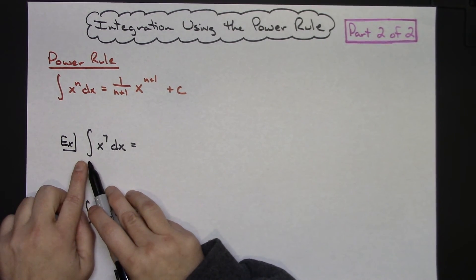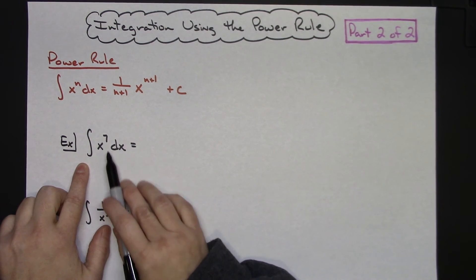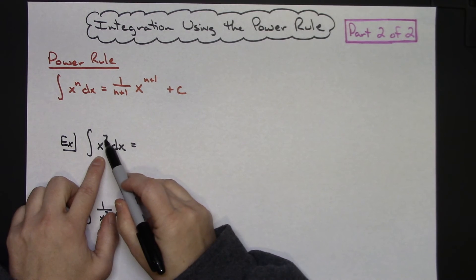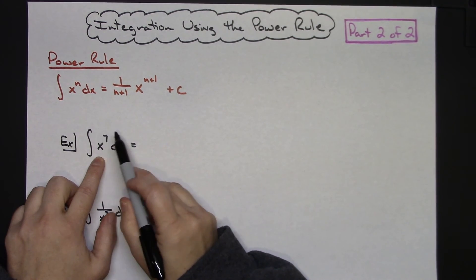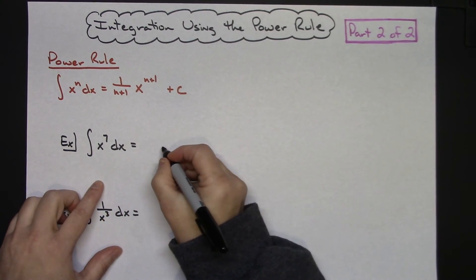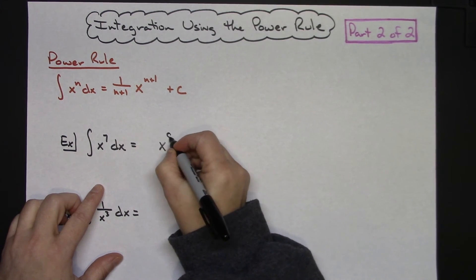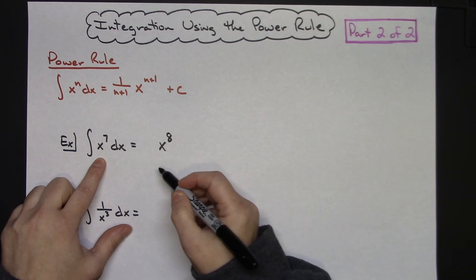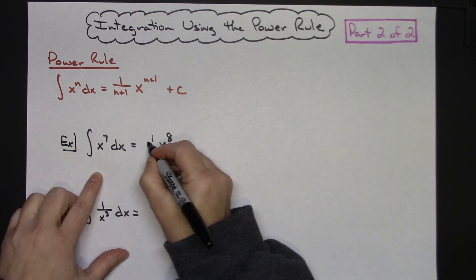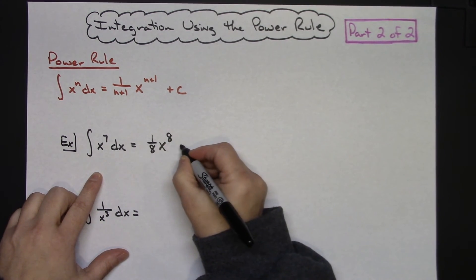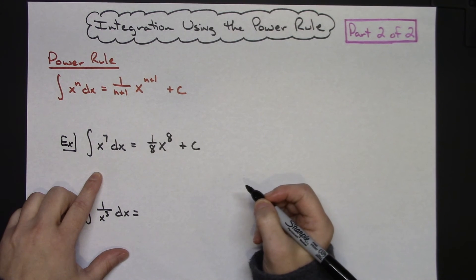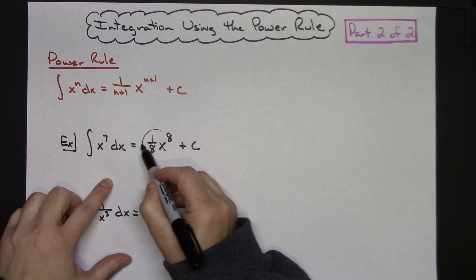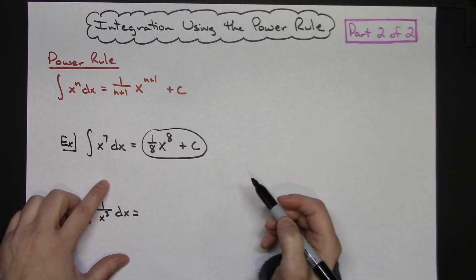Let's start with a really simple first example: integrating x to the 7th DX. I'm going to take that 7 and add 1 to it, so my new exponent becomes 8 — x to the 8th. In front I put 1 over whatever I got when I added, so that's 1/8. And then don't forget the plus C. So the answer is (1/8)x^8 + C.